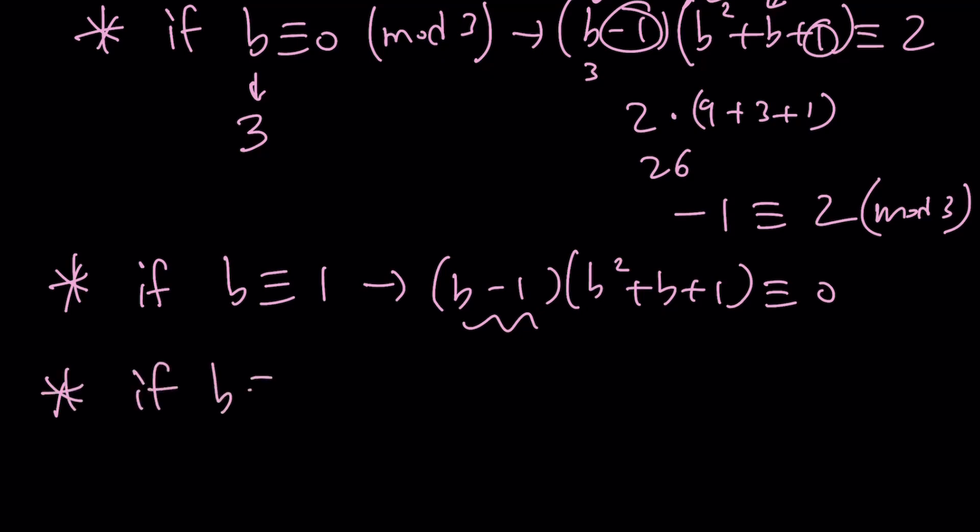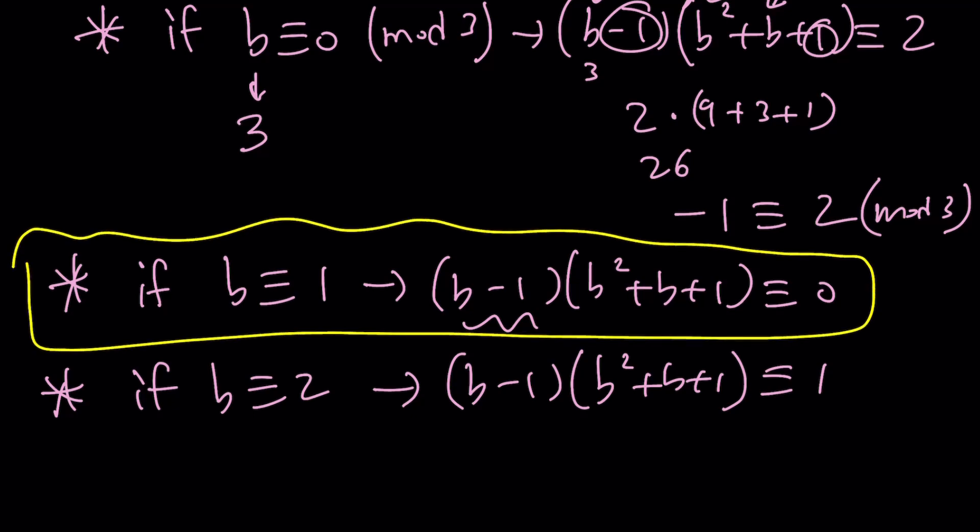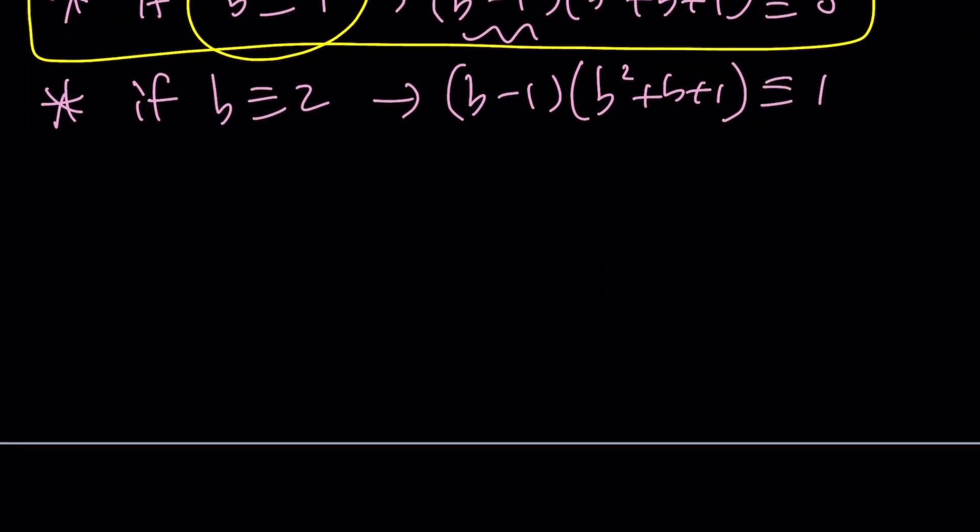And since we want this product to be divisible by 3, you know what that means? It means that the b you're looking for must be 1 mod 3. So the only b that satisfies this equation has to be in this form.